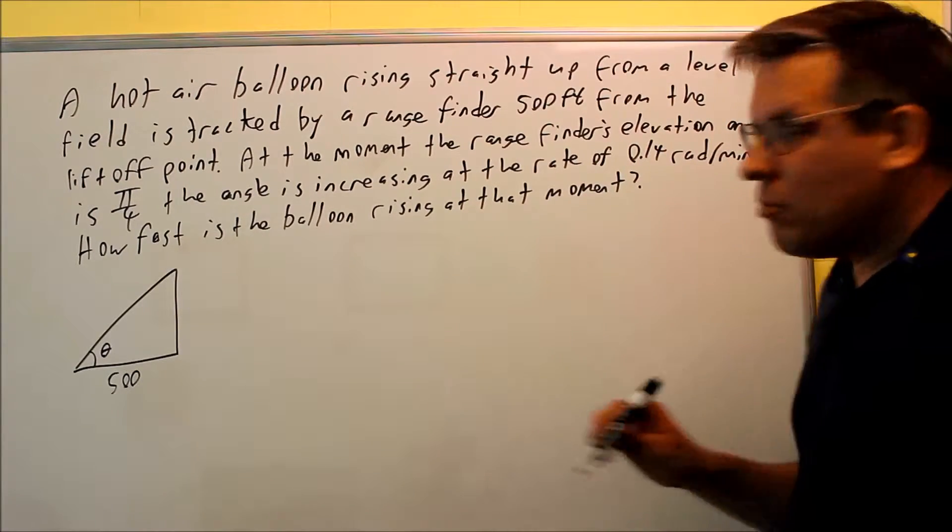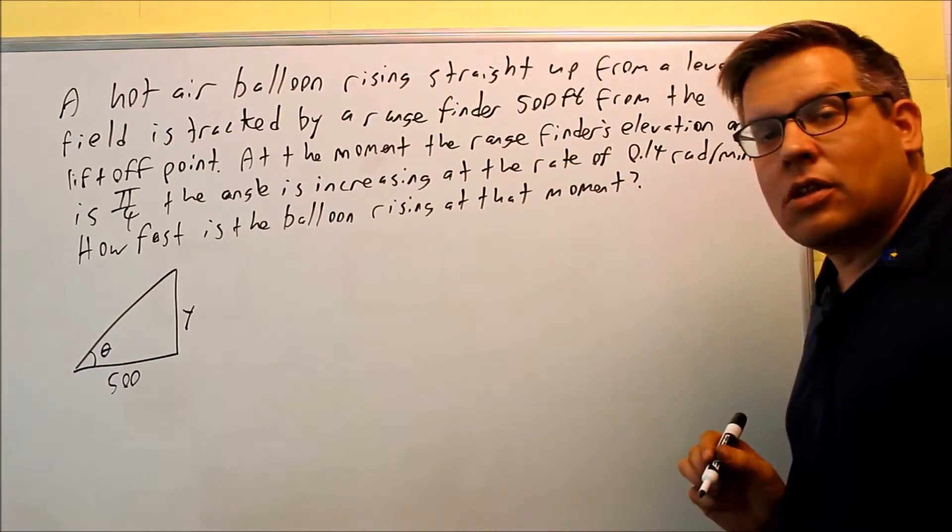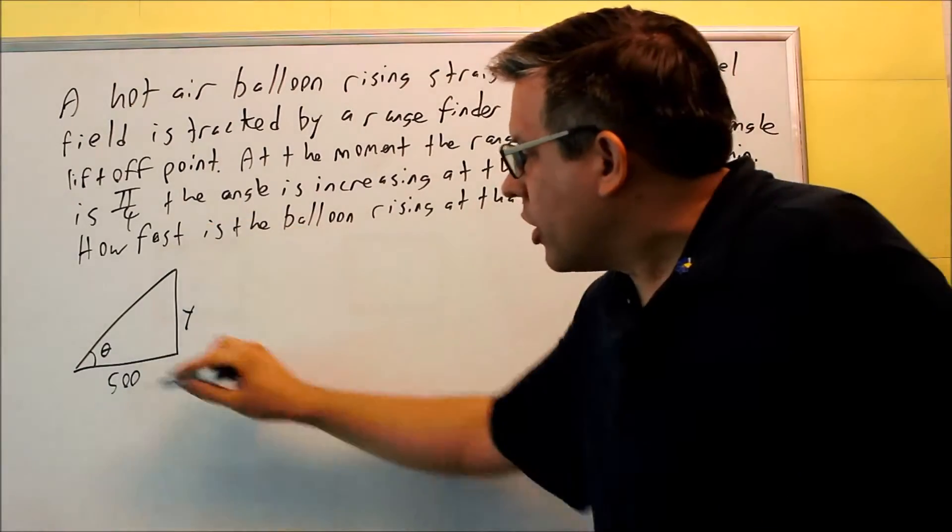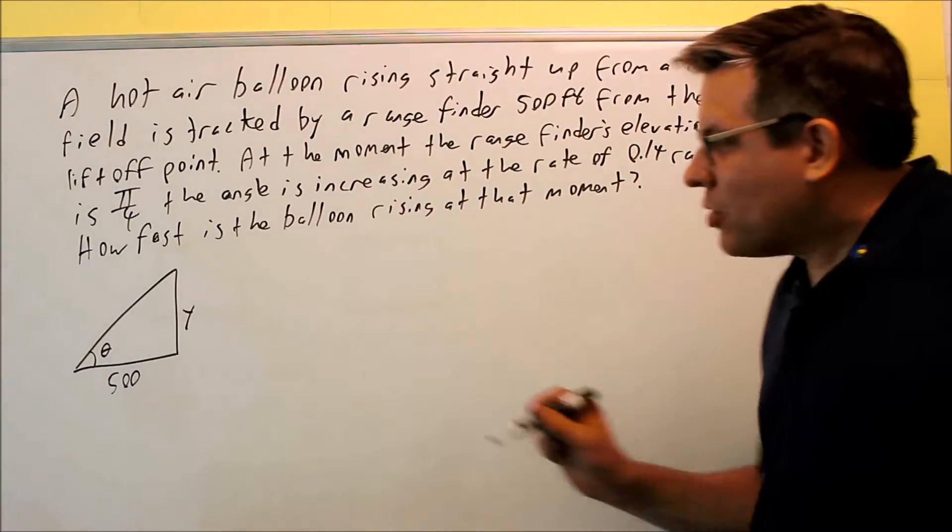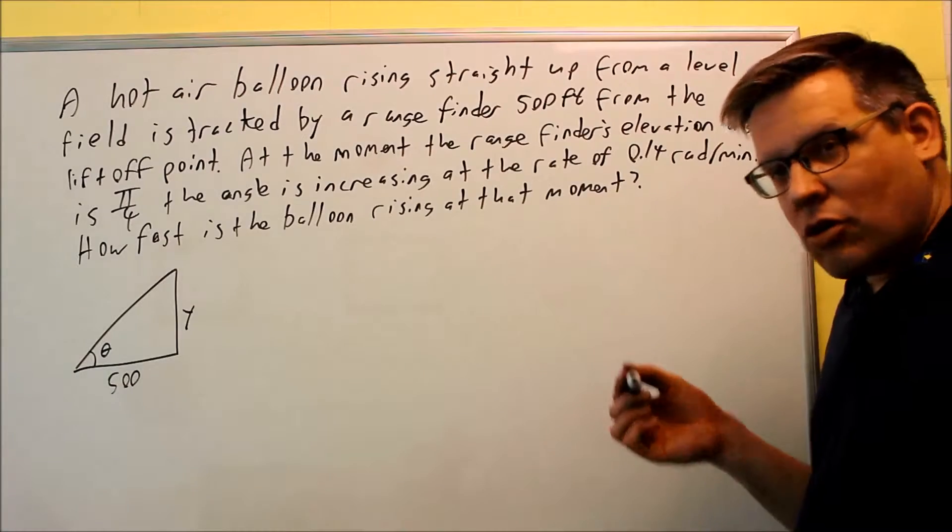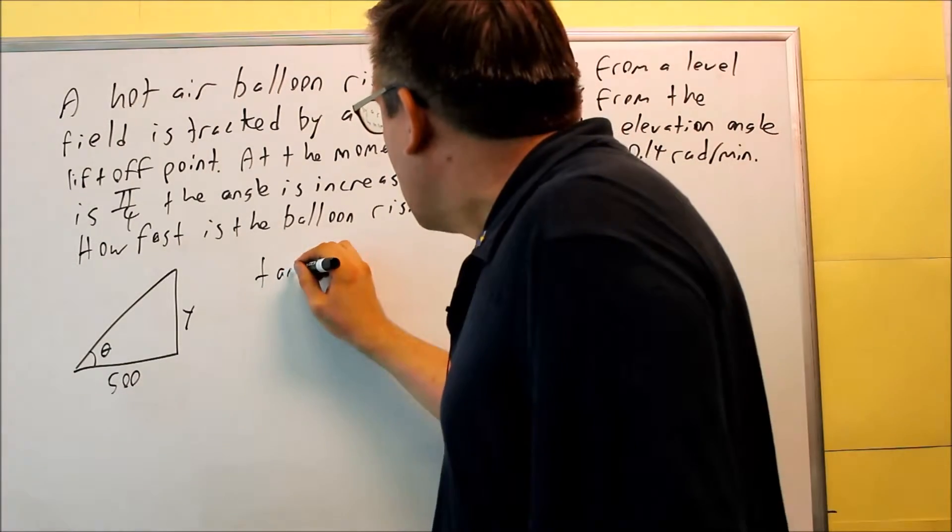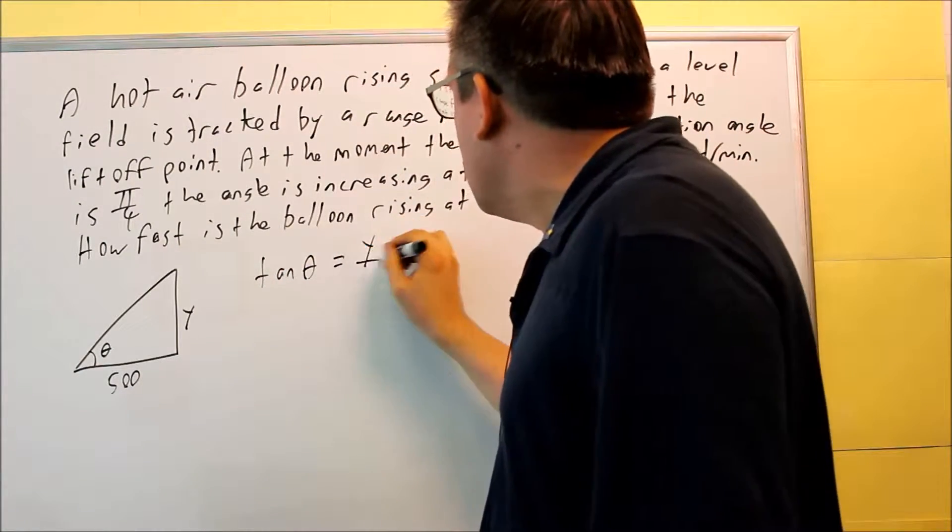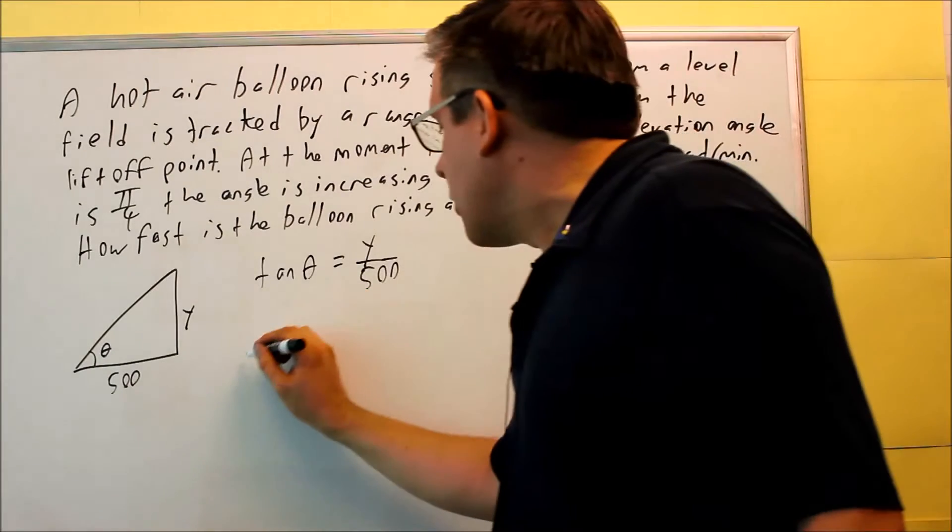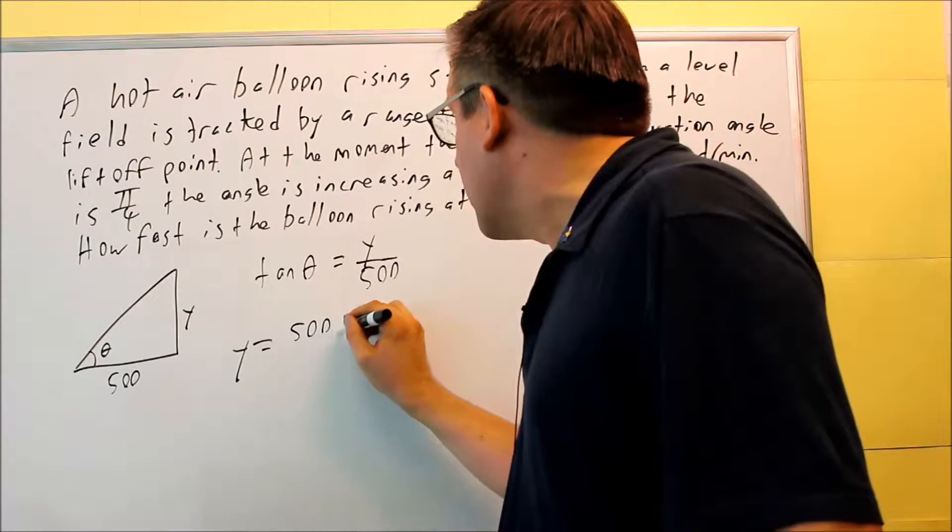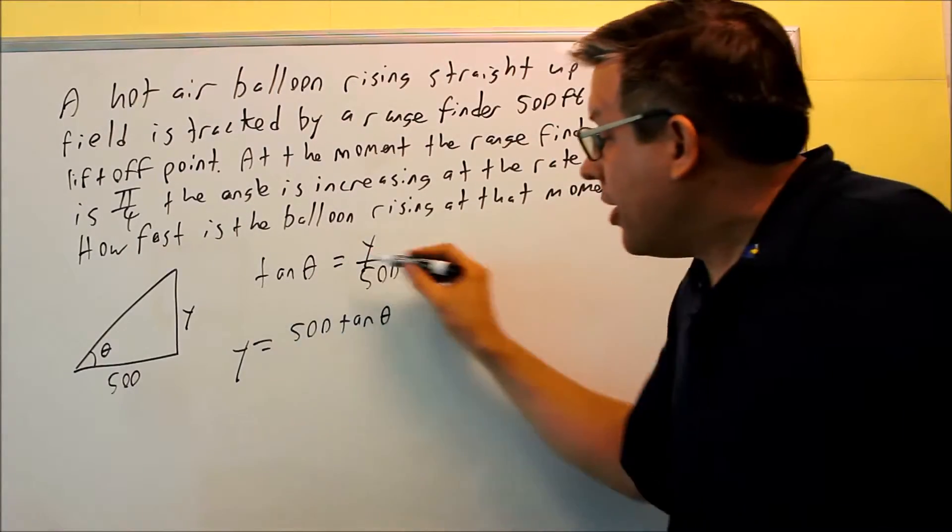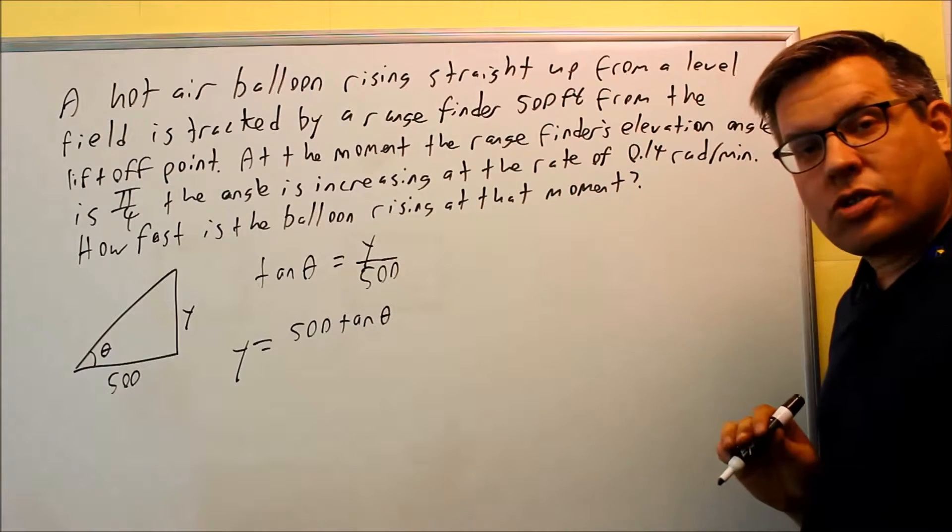How fast is the balloon rising at that moment? I'm going to use y over here to indicate the vertical distance. We want to come up with a relationship with this particular triangle. In particular, I have an angle and I have an opposite and an adjacent side. So based on trig definitions, I can say that tangent theta equals y over 500, or when I multiply both sides I can get y equals 500 tan theta. That's actually going to be the formula that I'm going to use here on this particular problem.